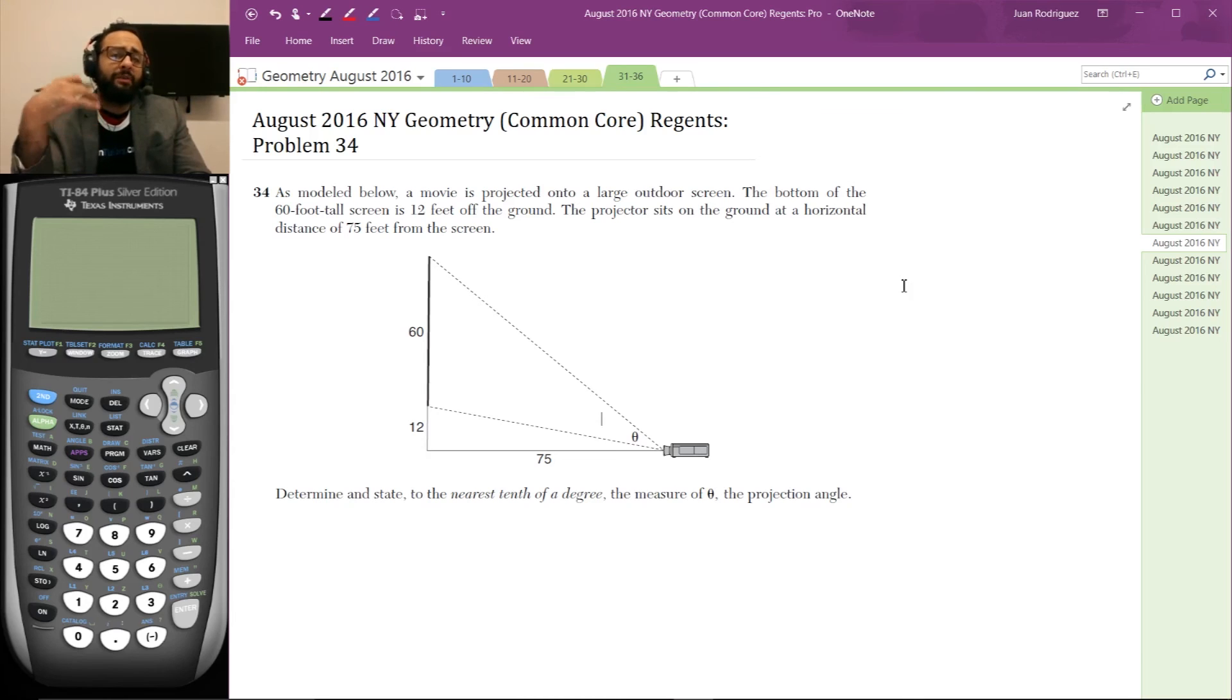So here's the problem. As modeled below, a movie is projected onto a large outdoor screen. The bottom of the 60-foot tall screen is 12 feet off the ground. I do look at the picture while I'm reading. So 60 feet, 12 feet. So this is probably the ground. And the projector sits on the ground at a horizontal distance of 75 feet from the screen. So then determine to the nearest tenth of a degree the measure of theta, the projection angle.